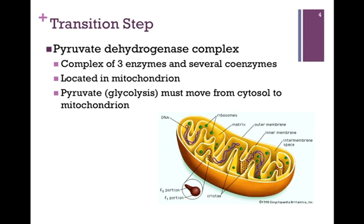Remember, glycolysis occurs in the cytosol and our product is pyruvate. That is the substrate for the transition step, which occurs within the mitochondria. So our first job to carry out the transition step is to move pyruvate from the cytosol into the mitochondria. We will look more at the structure of the mitochondria in the next lesson.